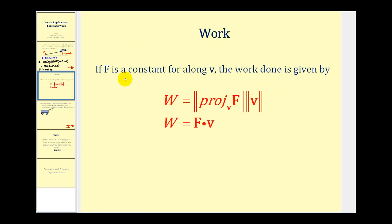Now let's talk about work. If f is a constant along vector v as we just saw, then the work done is given by the magnitude of the projection of f onto v times the magnitude of v or vector f dotted with vector v. Now let's take a look at a work problem.